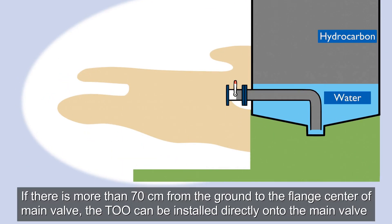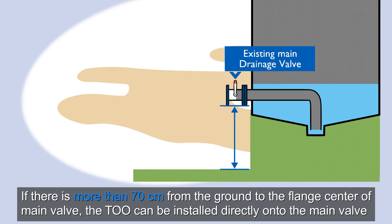If there is more than 70 cm from the ground to the flange center of main drainage valve, the TOO can be installed directly onto the main valve.